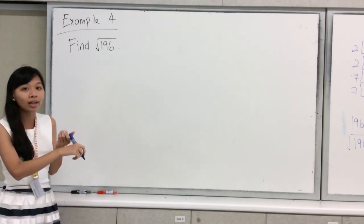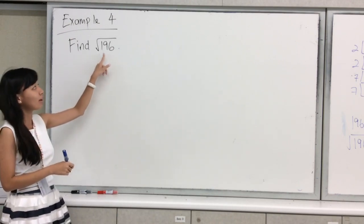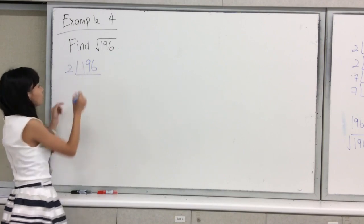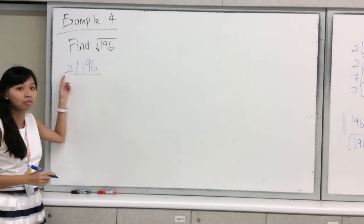First of all, you will need to find the prime factorization of 196 first. So we will just do this. Divide by the lowest prime number, which is 2.